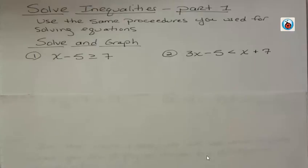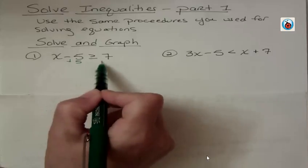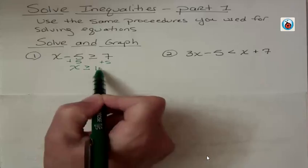If you were solving this as an equation, number one, what would you do? You'd want to get x by itself. So you would add 5 to both sides. When you add 5 to both sides, you get x is greater than or equal to 12.